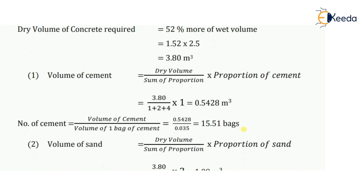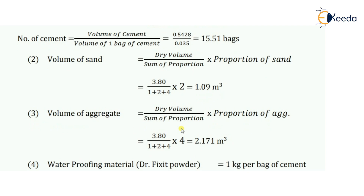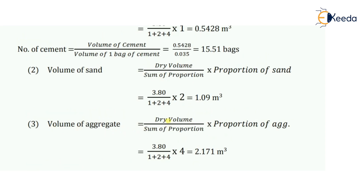Then I will calculate the volume of sand. Formula: dry volume divided by sum of proportions multiplied by proportion of sand. That is 3.80 ÷ 7 × 2 = 1.09 cubic meters of sand. For coarse aggregate: 3.80 ÷ 7 × 4 = 2.171 cubic meters of coarse aggregate.